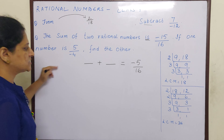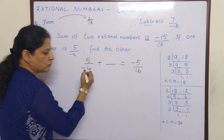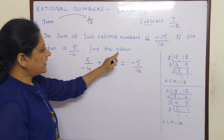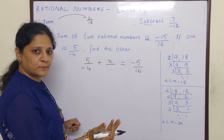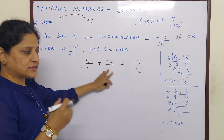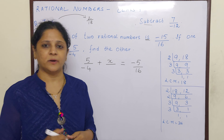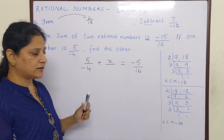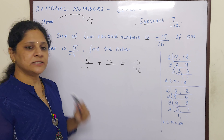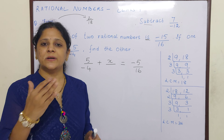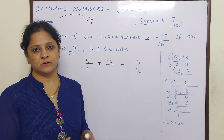Now here in this question, there are two operations involved — that is you have to do sum, which means addition, and you also have to do subtraction. So from the sum of this and this, first we will find out what is the sum of 4 by 9 and minus 6 by 18.